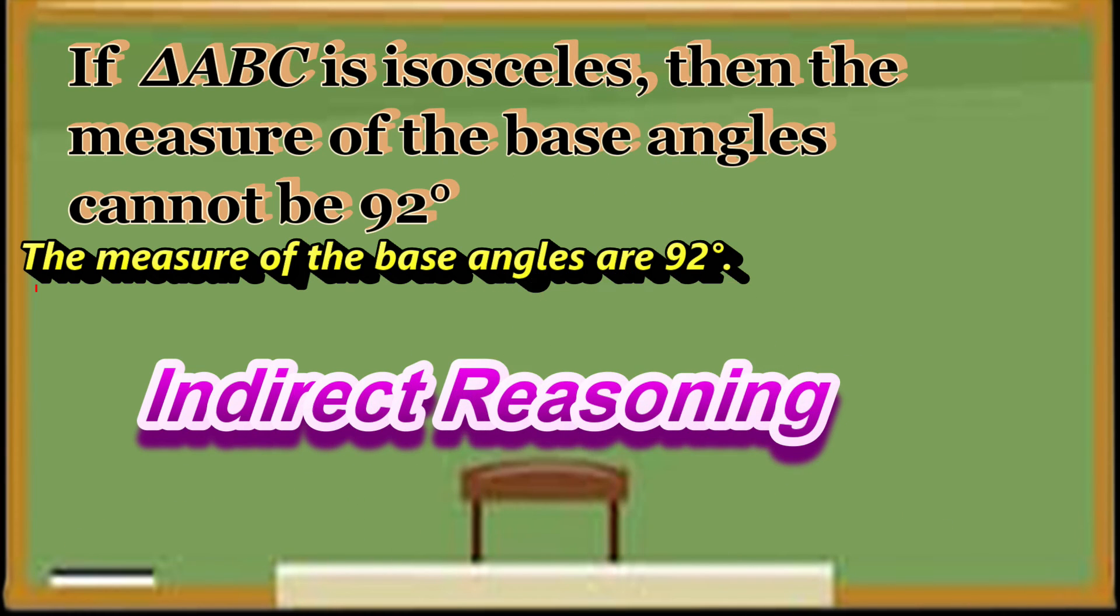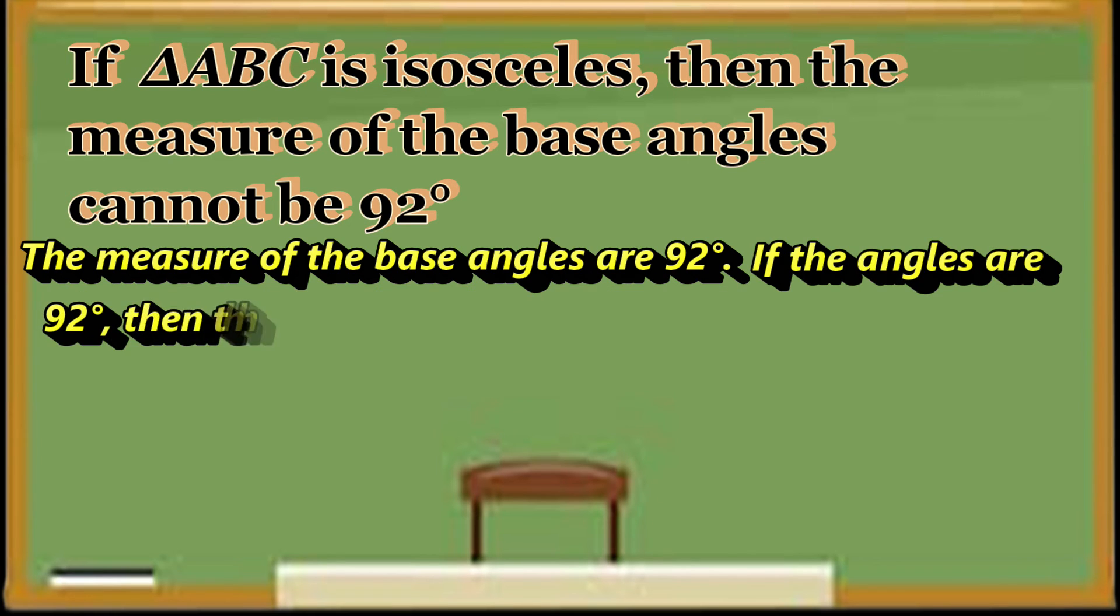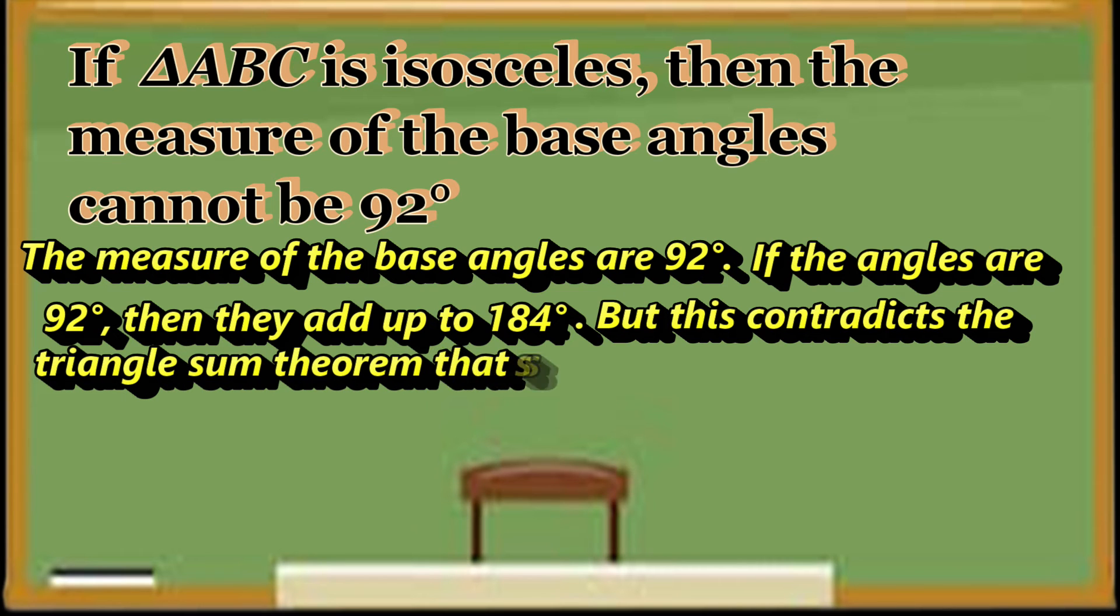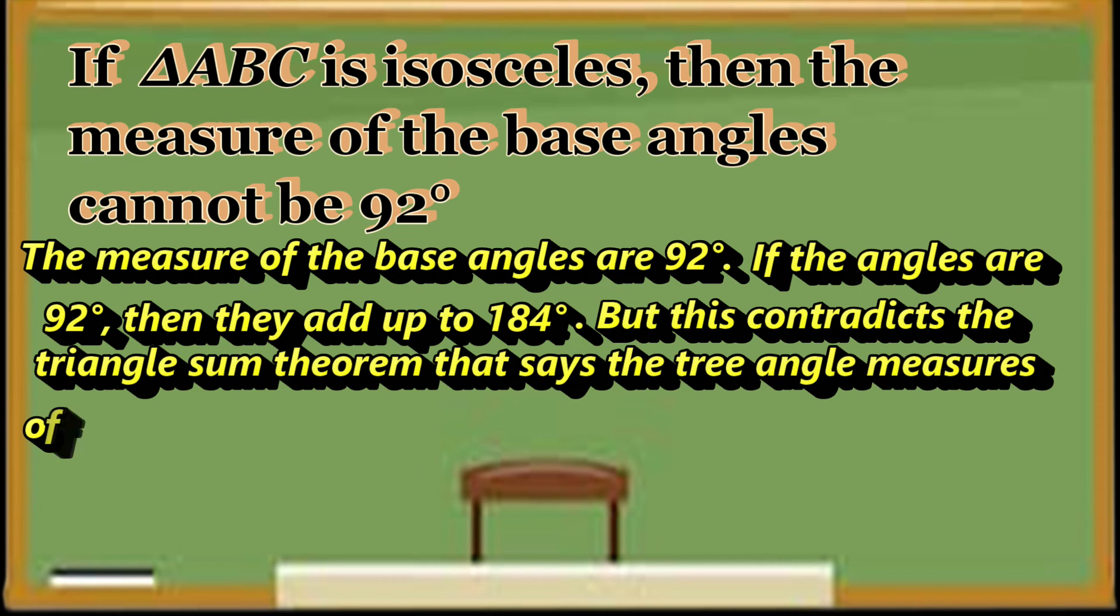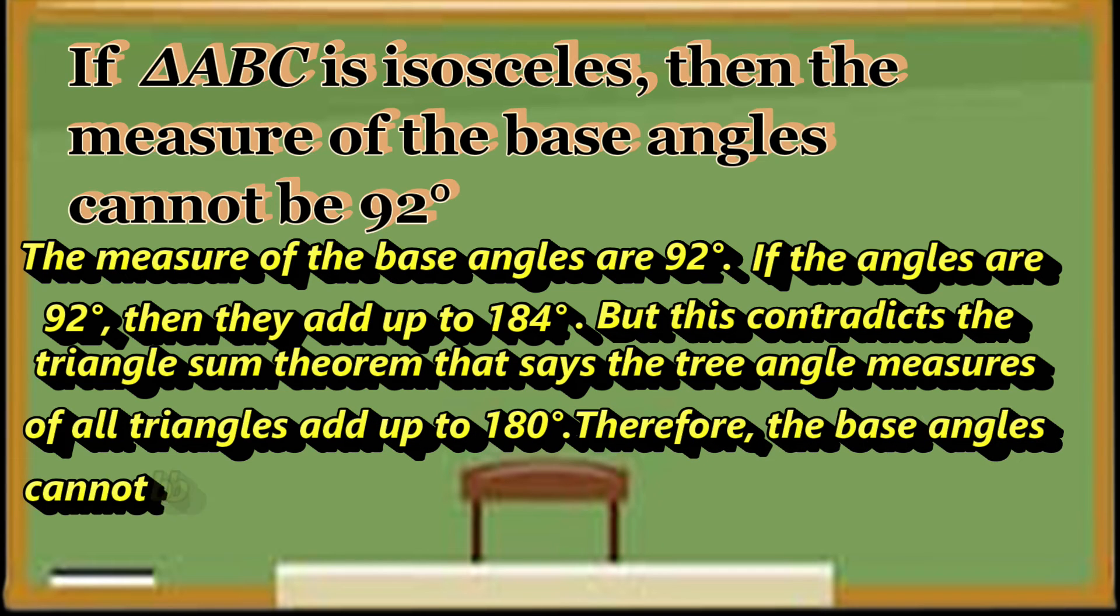If the angles are 90 degrees, then they add up to 180 degrees. But this contradicts the triangle sum theorem that says that 3 angle measures of all triangles add up to 180 degrees. Therefore, the base angles cannot be 90 degrees.